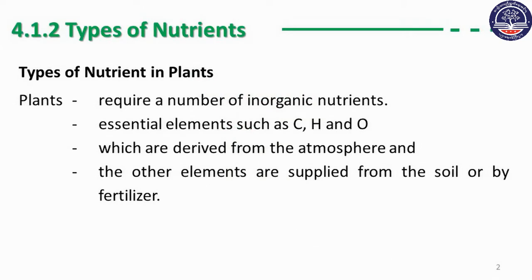We have a great system to sustain our life. Tons of nutrients in plants require a number of inorganic nutrients. The essential elements include carbon, hydrogen, and oxygen, which are derived from the atmosphere. The other elements are supplied from the soil.